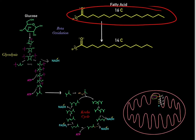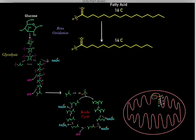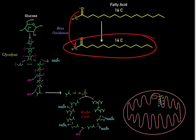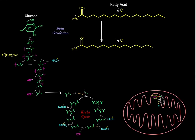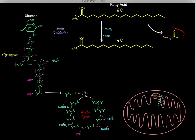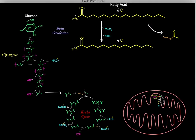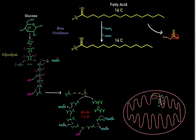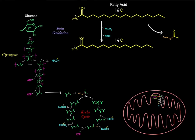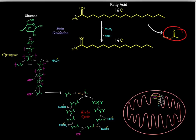For example, if we have a 16-carbon free fatty acid and go through one round of beta-oxidation, we'll be left with a 14-carbon free fatty acid. But we also produce one FADH2, one NADH, and one acetyl-CoA molecule. Those two lost carbons appear in the form of the two carbons in acetyl-CoA.